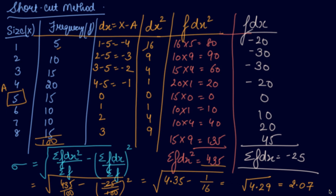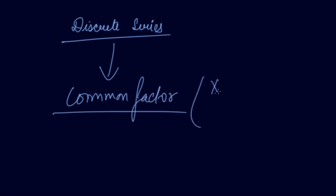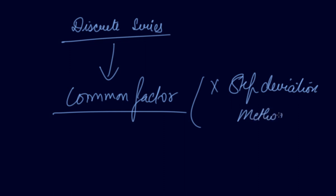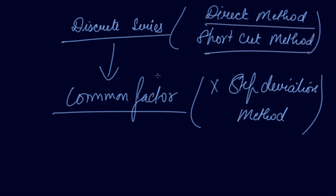In this way you can find the standard deviation using the shortcut method. In discrete series, it is very difficult to find a common factor, so we do not use the step deviation method. Therefore in discrete series, we have only two methods: the direct method and the shortcut method. Please download our Scholars Learning app and enjoy the learning experience.